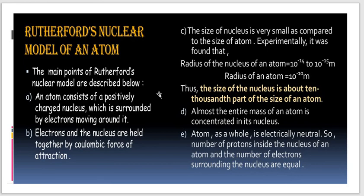The size of the nucleus of an atom is about 1/10,000th of the size of the atom, so we can say the atom has a large empty space. Almost the entire mass of an atom is concentrated in its nucleus. The atom as a whole is electrically neutral, so the number of protons inside the nucleus and the number of electrons surrounding the nucleus are equal.